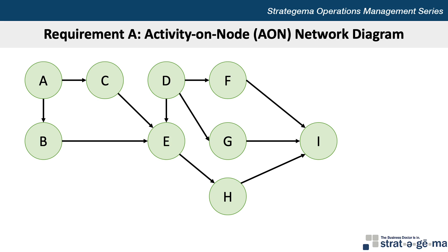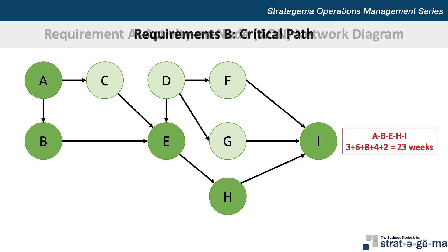There are many different ways you could draw a network diagram, so if yours looks a little different, that's fine. Next, we want to determine what the critical path is for requirement B. The easiest way to do that is to simply map all the activities through the network and add up their task times. Our first path through the network is A-B-E-H-I with task times of 3, 6, 8, 4, and 2 weeks respectively, adding up to a total path time of 23 weeks.